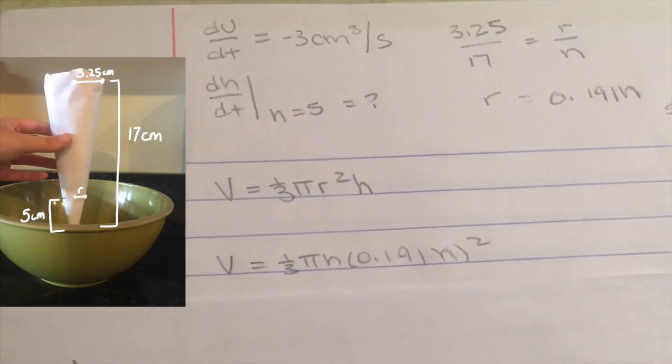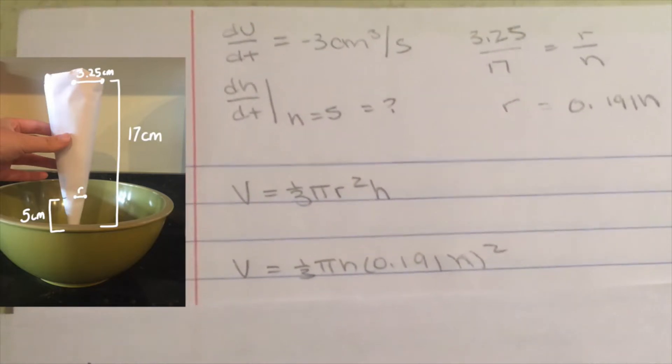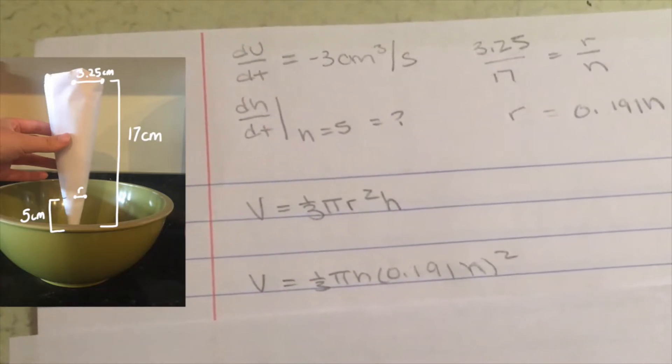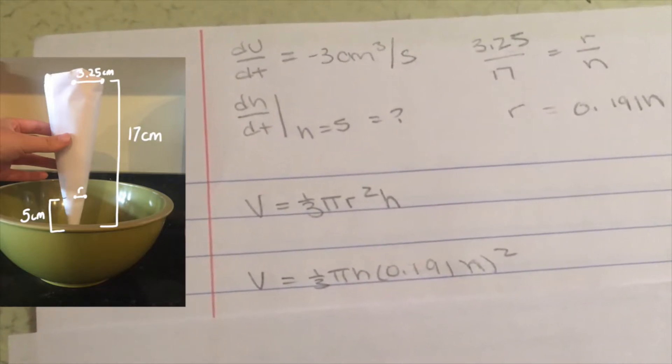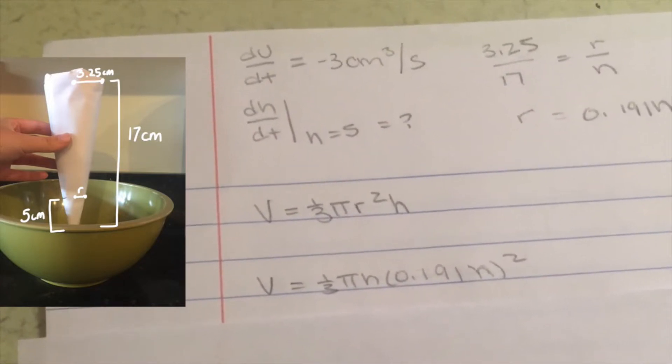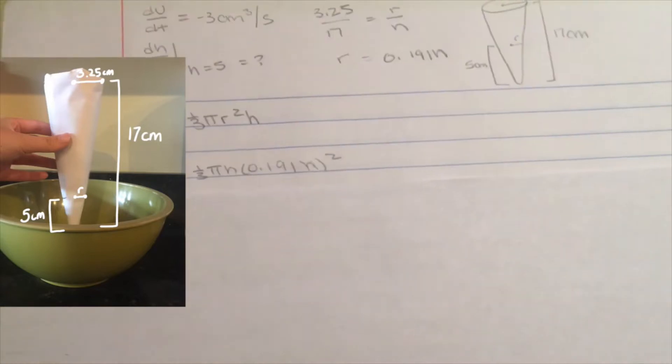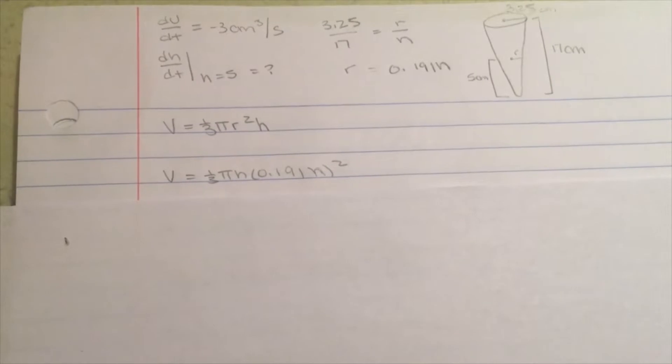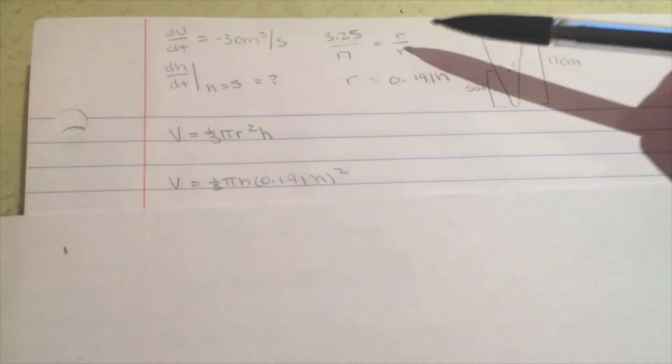First, we need to use the equation for the volume of a cone, which is volume equals one-third pi r squared times height. Notice how since there are two variables, height and radius, we can set up a proportion to substitute in for the radius so that we can rewrite the equation completely just in terms of h for the height. To set up the proportion, we would write that the radius over height of the big cone equals the radius over height of the little cone, just shown right here.